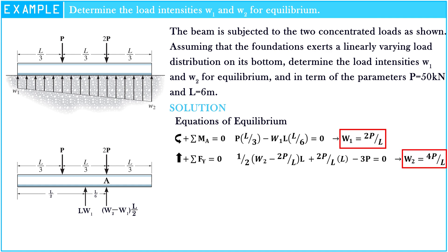Now we have the values of load intensities W1 and W2 for equilibrium. Next, we will solve the problem in terms of parameters P equals 50 kilonewtons and length of beam equals 6 meters. W1 equals 2 multiplied by 50 kilonewtons over 6 meters, which equals 16.666 kilonewton per meter. W2 equals 4 multiplied by 50 kilonewtons over 6 meters, which equals 33.333 kilonewton per meter.